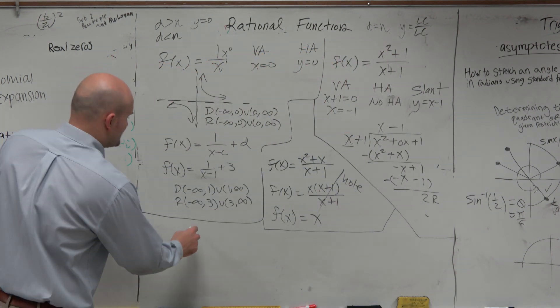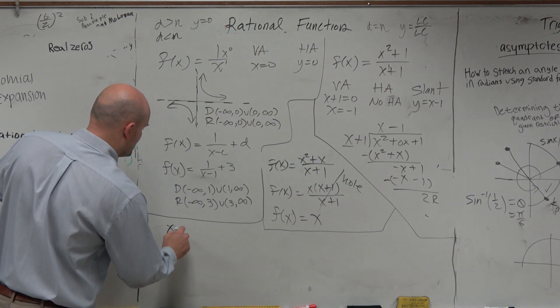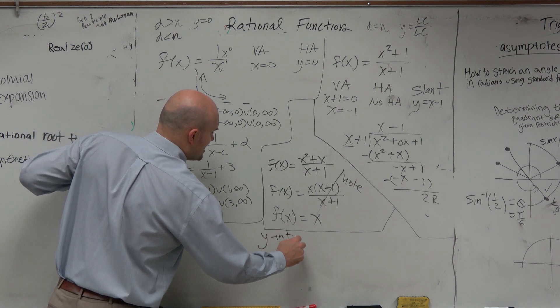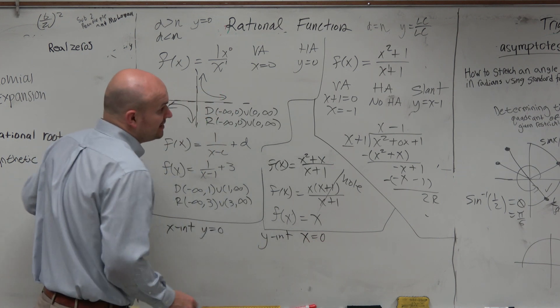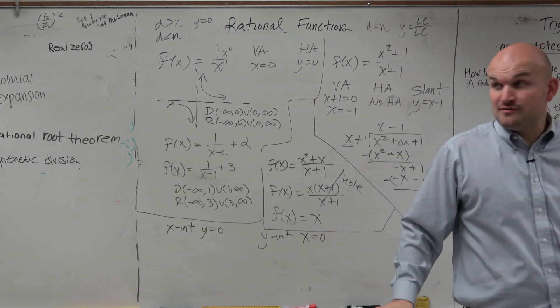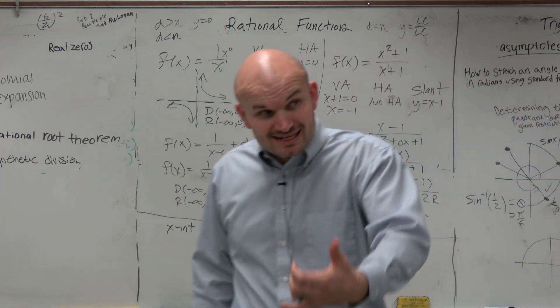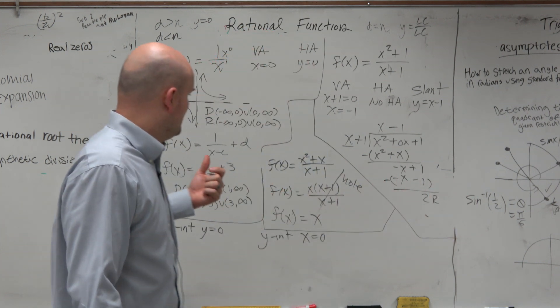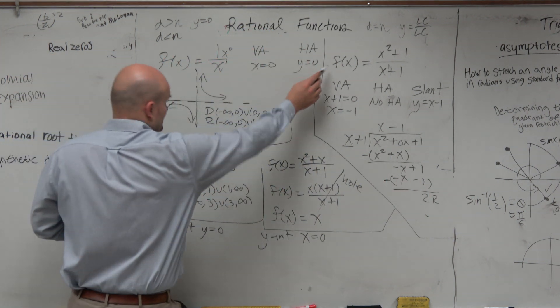The last thing I want to cover is identifying the x and the y-intercepts. x-intercept, y equals 0. y-intercept, x equals 0. Now, again, that's true for all of the functions, right? However, what we learn from this is there are some tricks. There are some tricks with rational functions. We can actually make things easier.